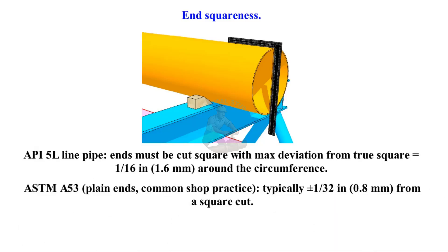ASTM A53 plain ends — common shop practice: typically plus or minus 1/32 inch, which equals 0.8 millimetres, from a square cut.